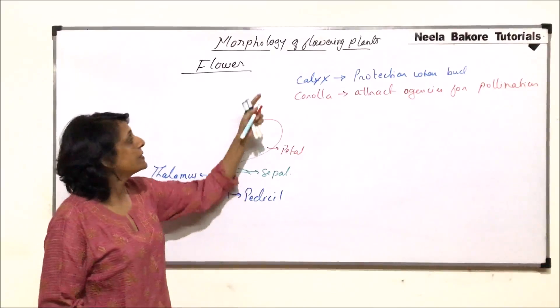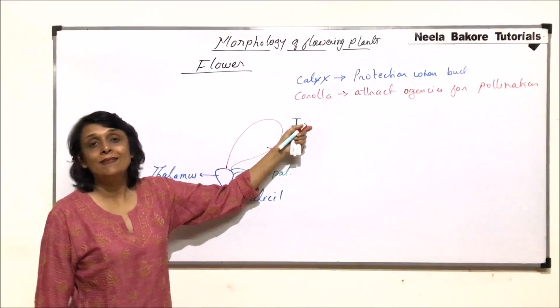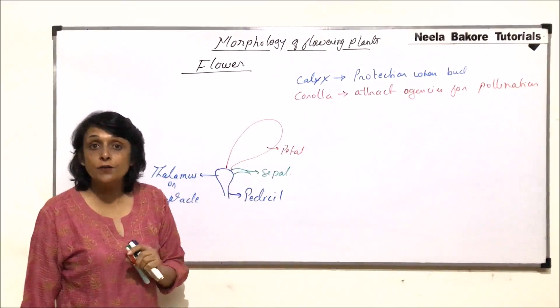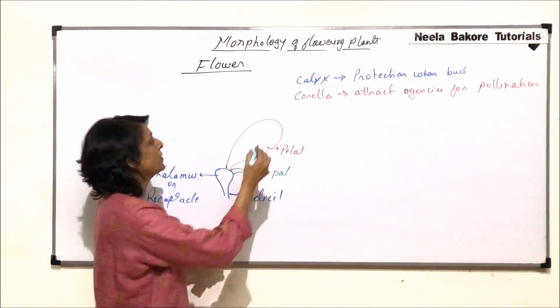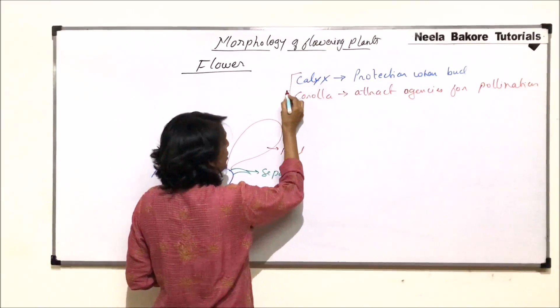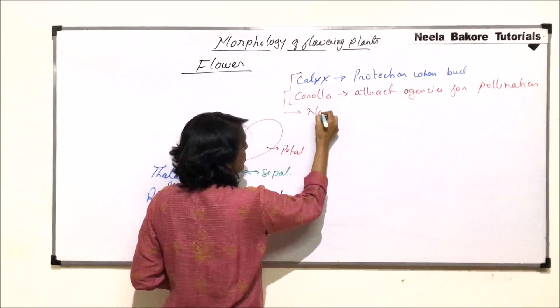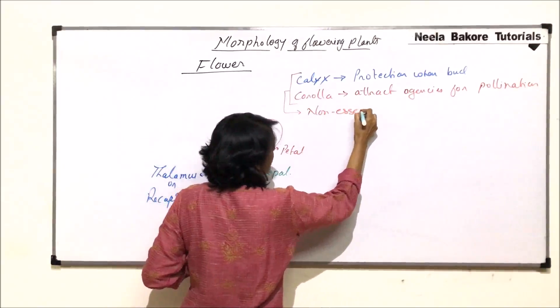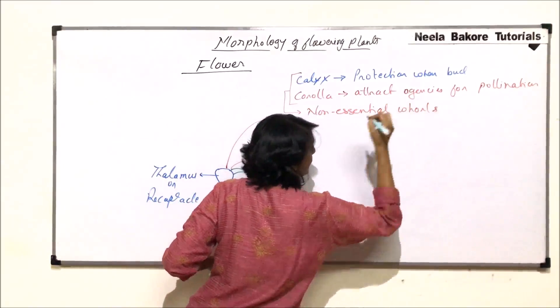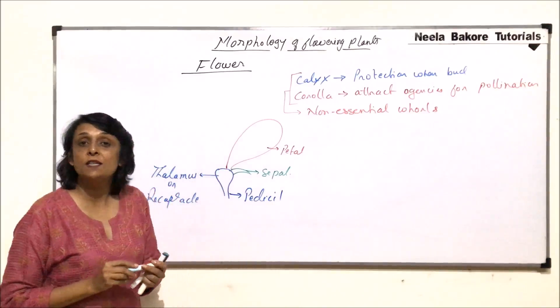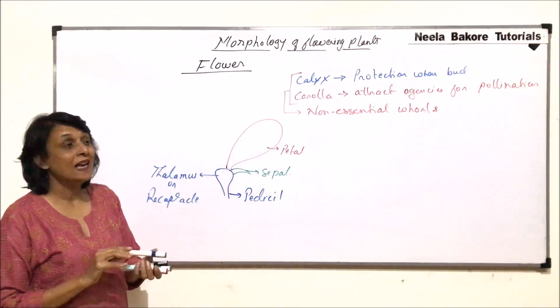These two whorls, that is calyx and corolla, they are called the non-essential whorls because they do not participate in reproduction. These two would be termed as non-essential whorls and the reason because they are not participating in reproduction.